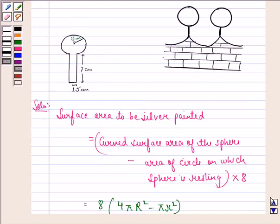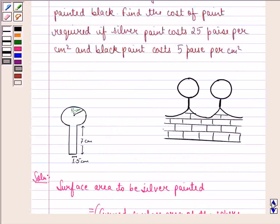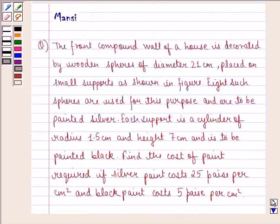Now this is because we see the figure looks something like this. Also it is given to us in the question that the diameter is 21 cm so radius will be 21 by 2 cm. And also it is given that each support is a cylinder of radius 1.5 cm. So the circle on which the sphere is resting will have a radius of 1.5 cm.